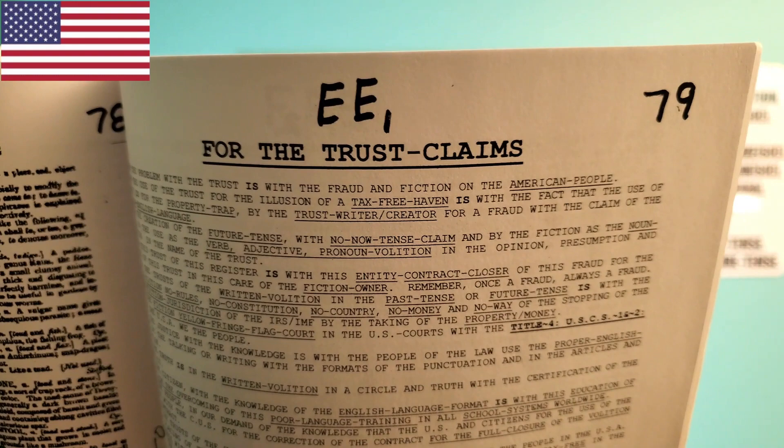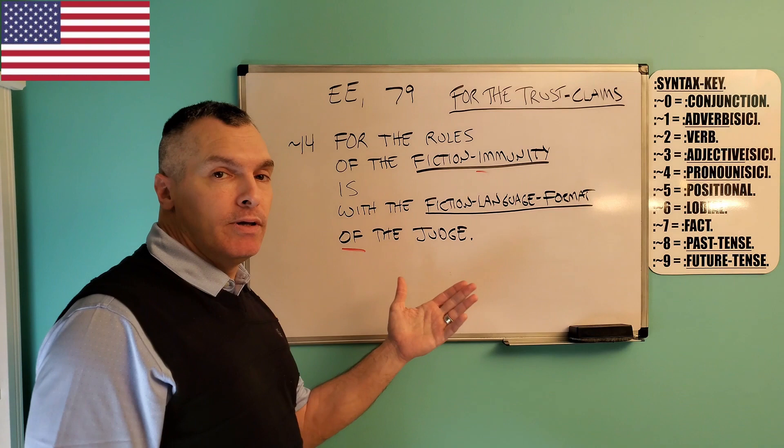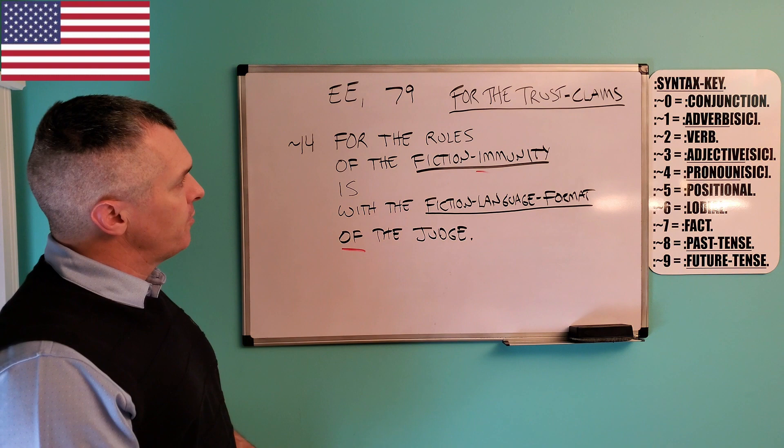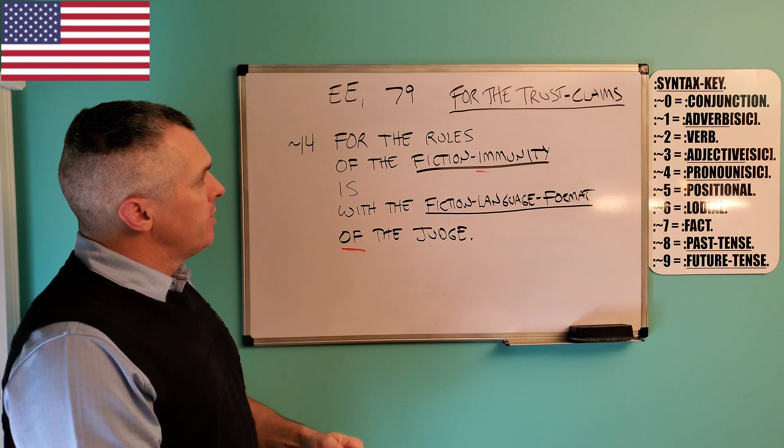As you can see, this is the page I'm taking my example from in this book. Here we have the example on page 79 for the trust claims, number 14. And I've graphed it to make it easier to see. Now first of all, I'm going to run through and address some other errors that are going on here.